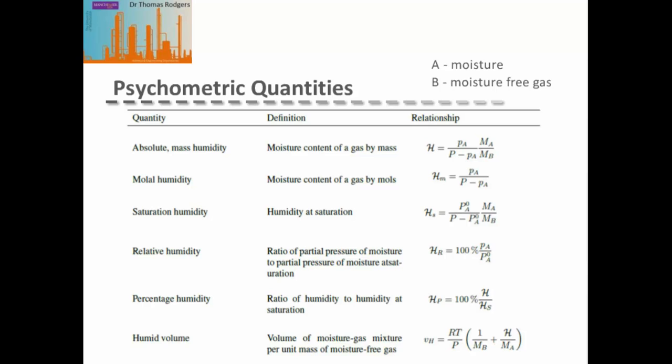The saturation humidity uses the total pressure minus the saturation pressure of the moisture — i.e. the partial pressure of the moisture-free gas if saturated — modified by the ratio of molecular weights. The relative humidity is the ratio of the partial pressure of the moisture to the partial pressure at saturation, multiplied by 100. The percentage humidity is the ratio of the humidity to the humidity at saturation, multiplied by 100.